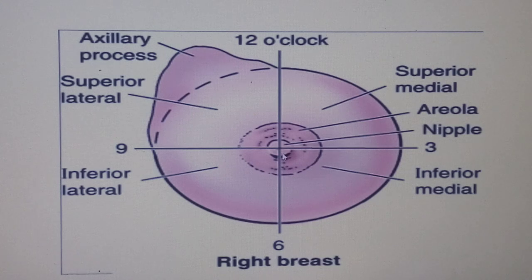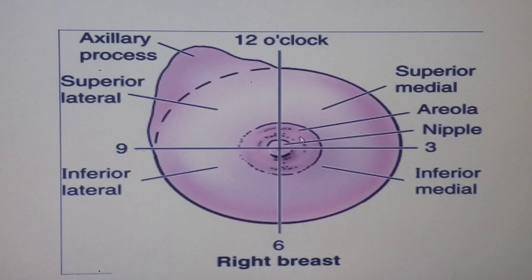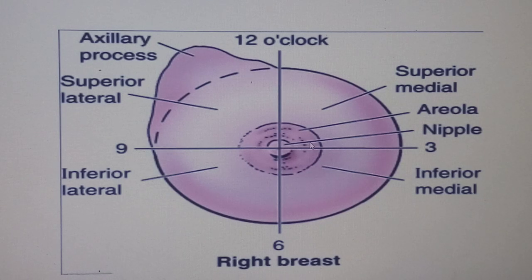The nipple has an area of hyperpigmentation around it called the areola. In the areola, we don't expect to see hair and we don't expect fat. However, sebaceous glands are present there. During pregnancy and lactation, those modified sebaceous glands become enlarged and are called the tubercles of Montgomery — located in the areola, devoid of fat and normally devoid of hair.